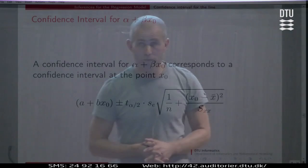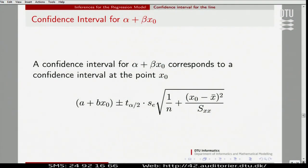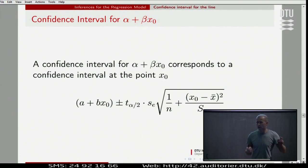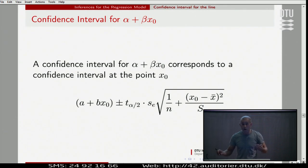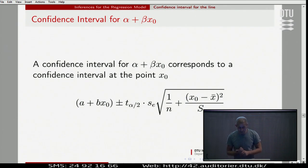We jump to the line altogether, not focusing specifically on the slope or the intercept. That's also why it's good to be able to handle the uncertainty in the intercept, because we may have to use that to combine the two things — to do statistics for the line.